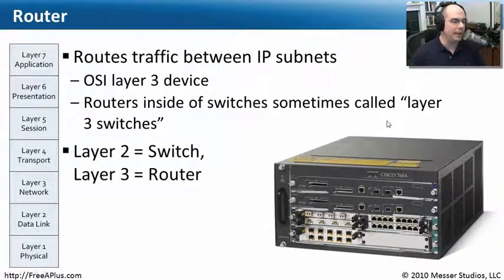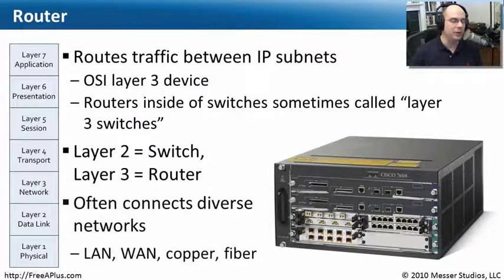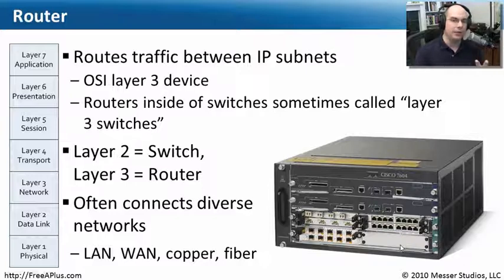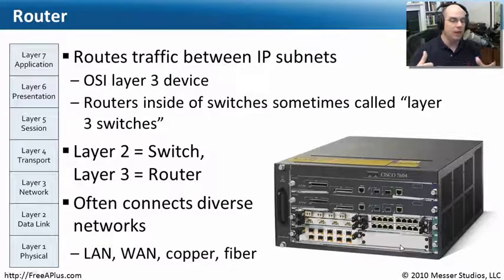Ultimately, if it's working at layer two it is a switch; if it's working at layer three it is a router. Those two terms are not interchangeable — that's really how we define those in our industry. Most often we are connecting very diverse networks: WAN connections, fiber connections, customized copper connections. Our router is able to translate between all of those different topology types and send TCP/IP traffic from one port to another. You most often see this on the edge of a network, connecting diverse networks, communicating over short distances or even long wide area network distances.